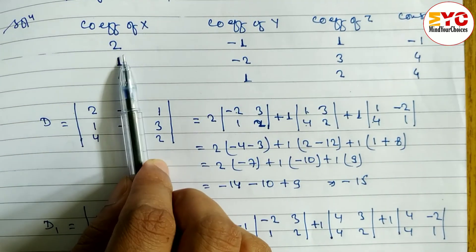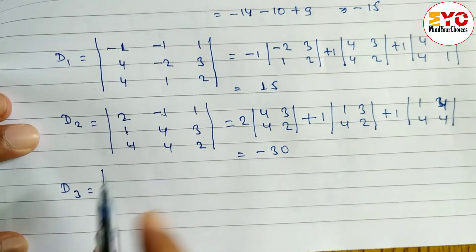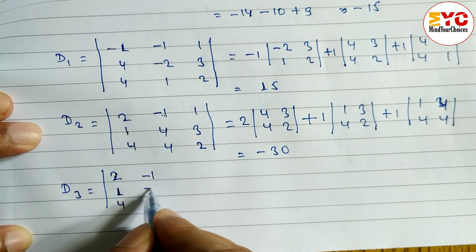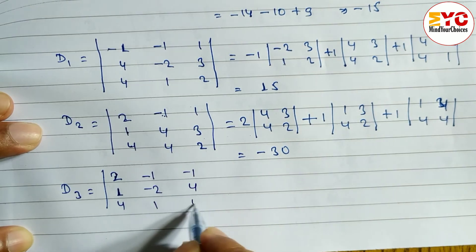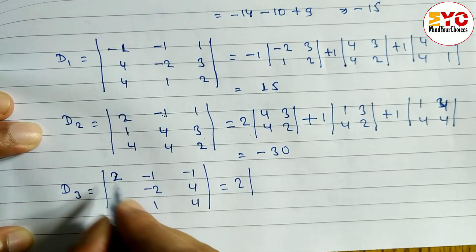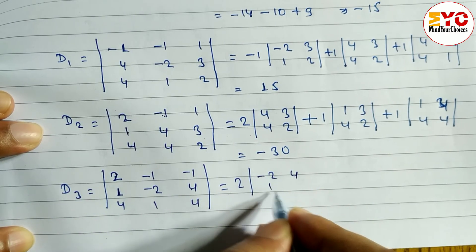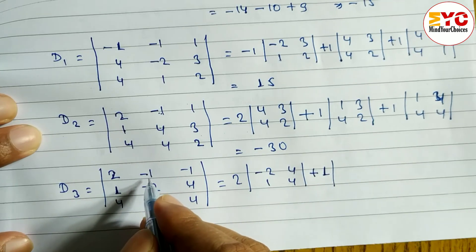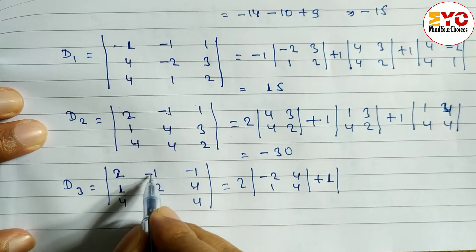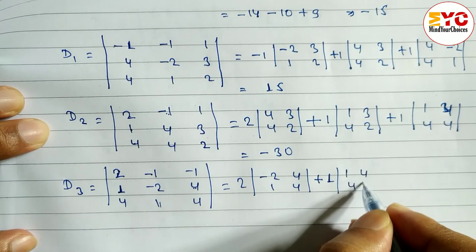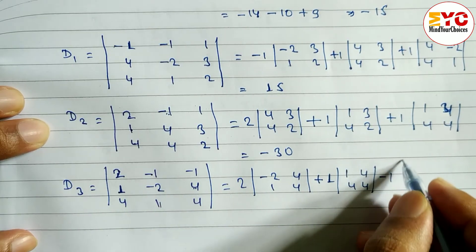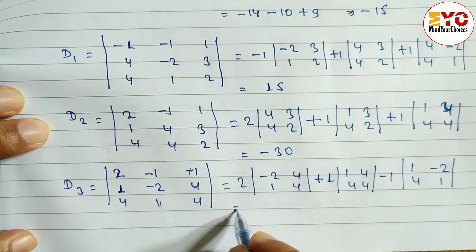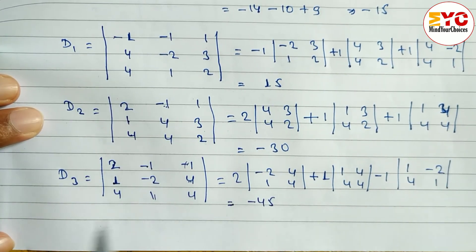To find D3, we take the coefficient of X, coefficient of Y, and the constant numbers. So: X-coefficients 2, 1, 4 / Y-coefficients minus 1, minus 2, 1 / constants minus 1, 4, 4. Expanding: 2 with minor minus 2, 4, 1, 4; then minus 1 with minor 1, 4, 4, 4; then plus 1 with minor 1, minus 2, 4, 1. Solving gives D3 equals minus 45.